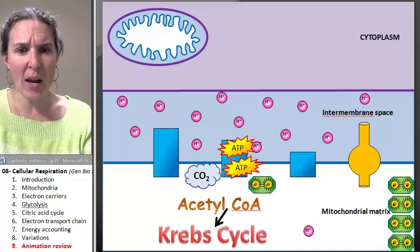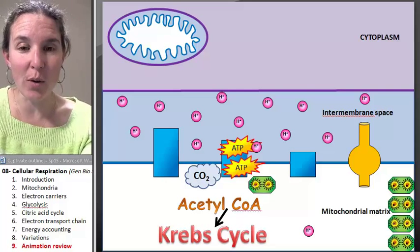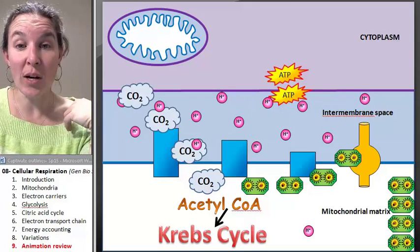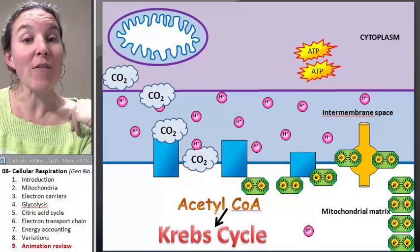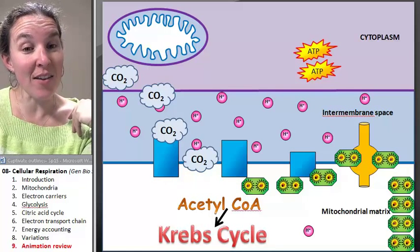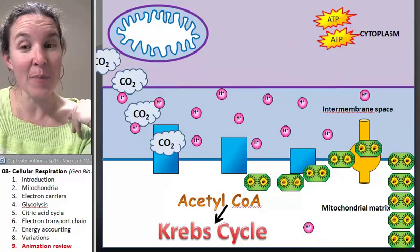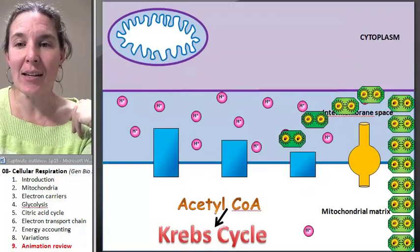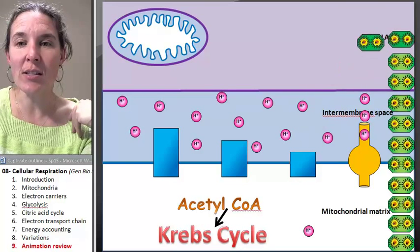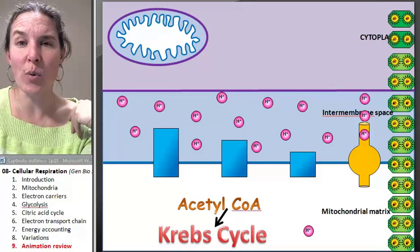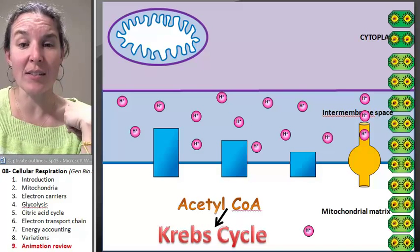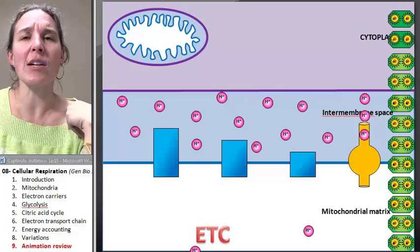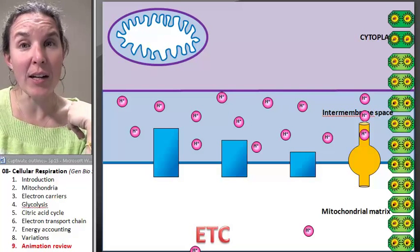Now our acetyl-CoA is going to enter the Krebs cycle. Let's go see what comes out. Oh my gosh, this is really cool. What's coming out? We got two ATPs directly out of this process. We got four carbon dioxides, there they go to be breathed off. And we have, was it eight high energy electron carriers, for a total of 12. There they are on the side. Do you remember what happens with them?